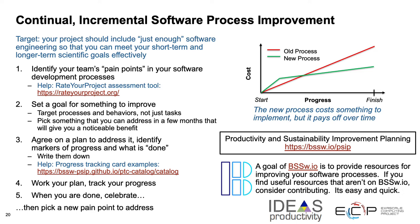So one of the things you can do is to use the Productivity and Sustainability Improvement Planning process — that's the PSIP site. One of the things to start with is to identify your team's pain points. You can do that by using the Help Rate Your Project Assessment Tool. Get all your team members to take this assessment — it doesn't take very long, and there are suggestions for improvement. You can decide together on something that you could improve in the process. Set a goal for that. You want to target processes and behaviors, not tasks. Pick something that you could address in a few months and that you know would give you benefit. Agree on a plan together, and then write down some markers of progress towards your goal — this will become a progress tracking card.